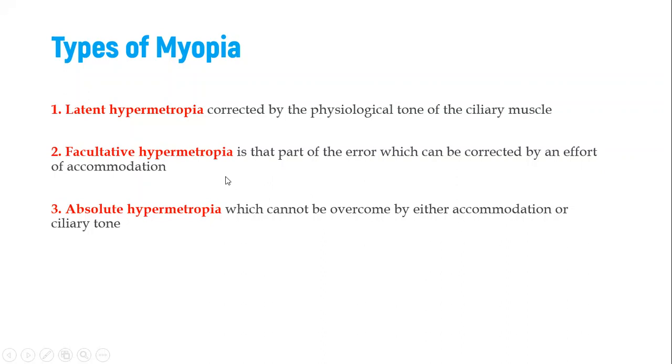which is part of the error which can be corrected by an effort of accommodation. So by effort of accommodation, we can correct the farsightedness. But we have absolute hypermetropia that cannot be corrected by any form of accommodation or the ciliary tone.